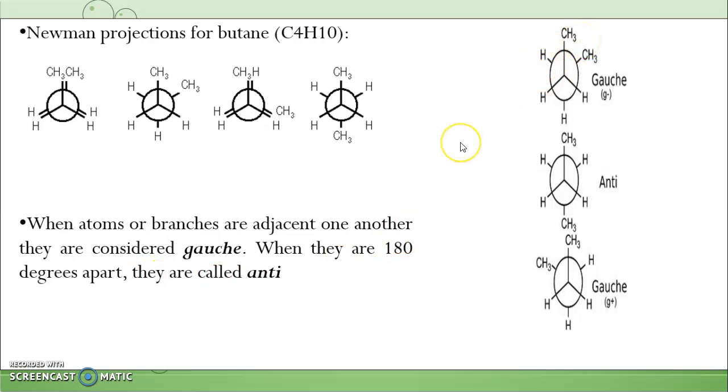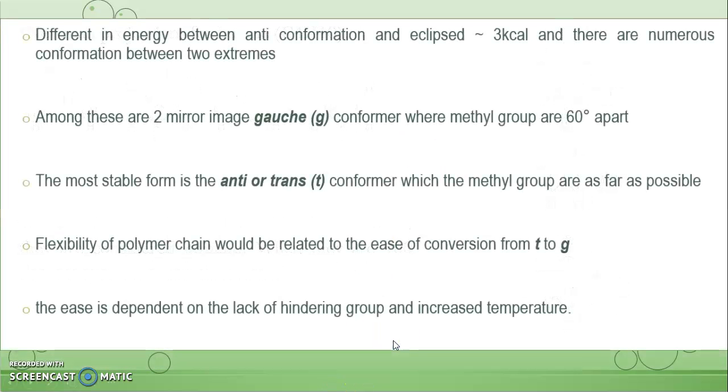Gauche will have higher energy compared to staggered. The difference in energy between anti conformation and eclipsed is 3 kilocalories, and there are numerous conformations between these two extremes. Among these are two mirror image gauche conformations where methyl groups are 60 degrees apart. The most stable form is the anti or trans conformer, which has the methyl groups as far as possible. Flexibility of polymer chain will be related to the ease of conversion from trans to gauche.